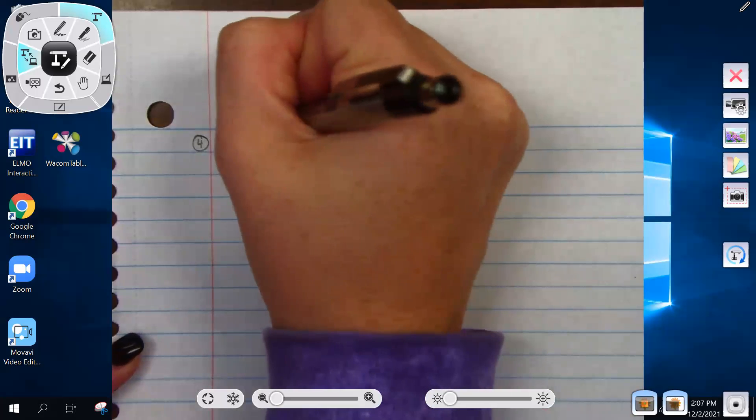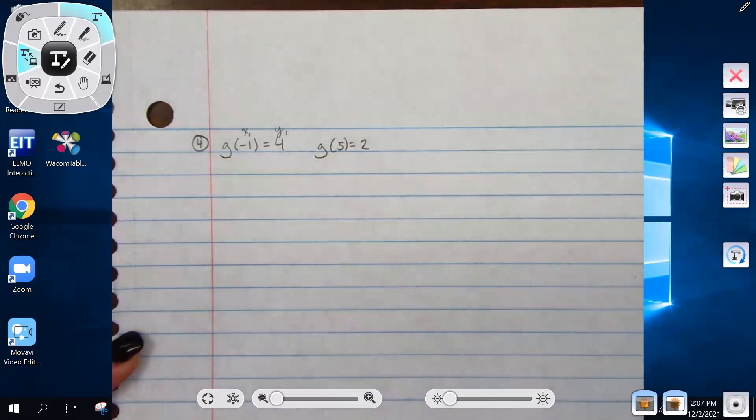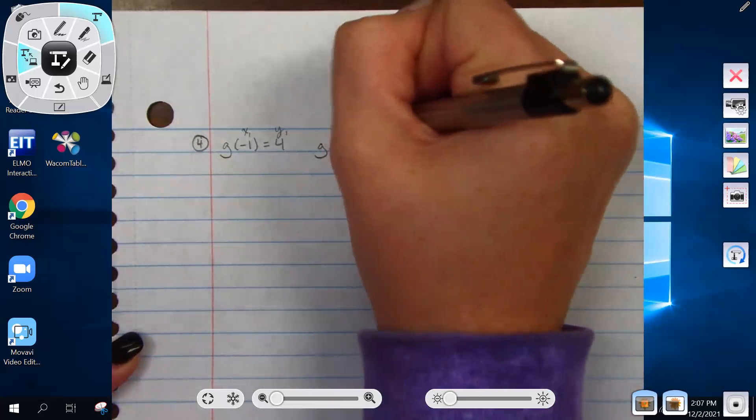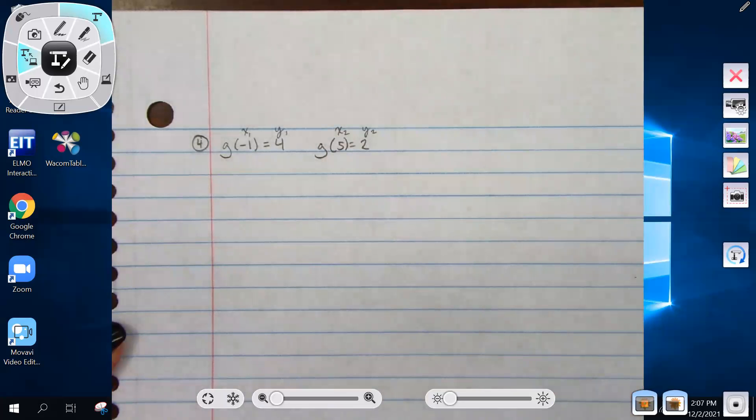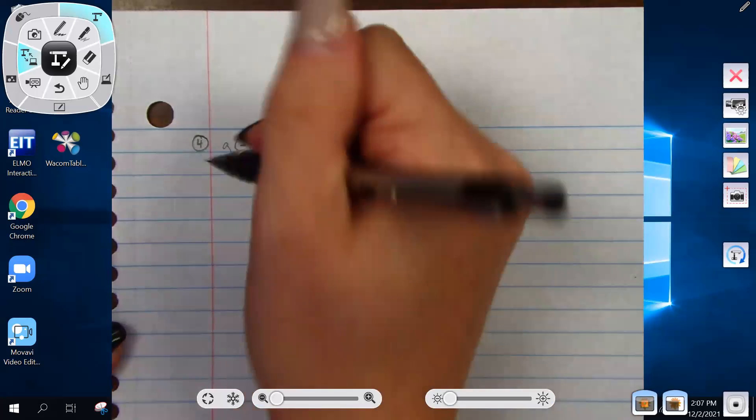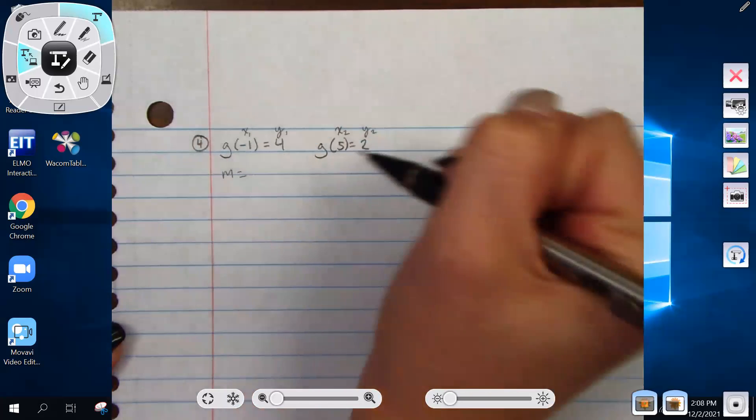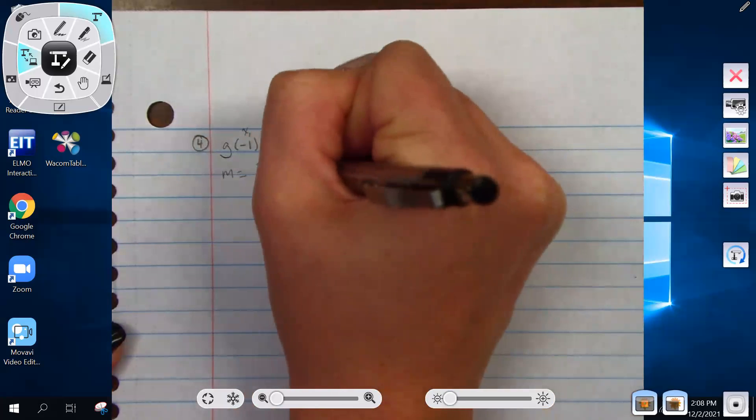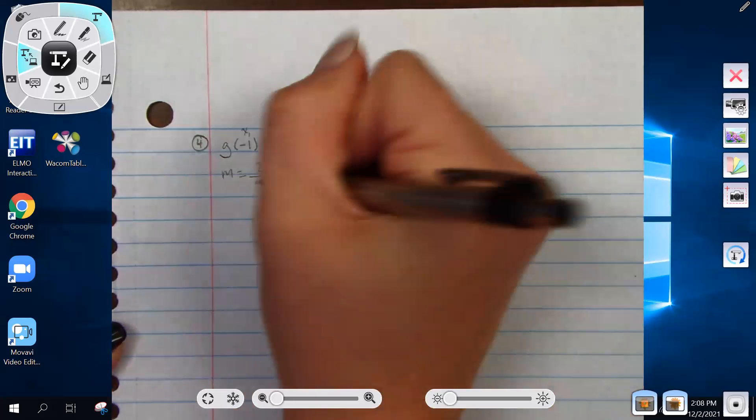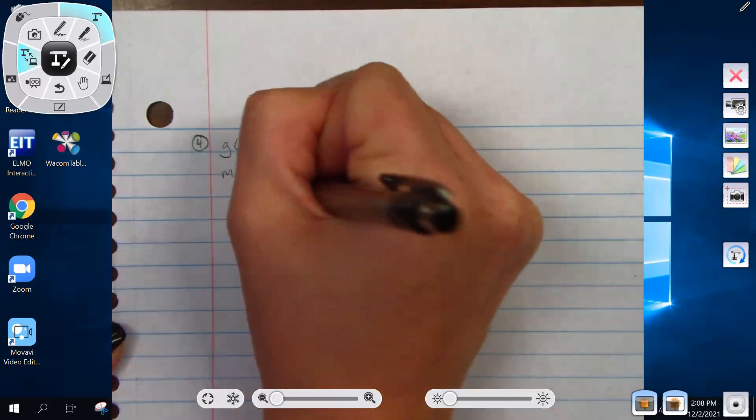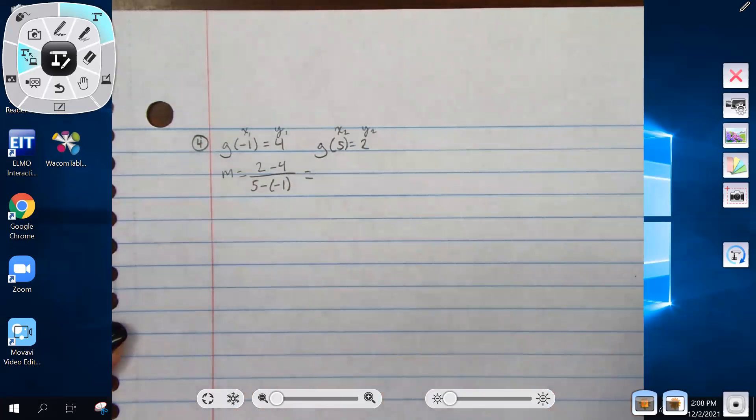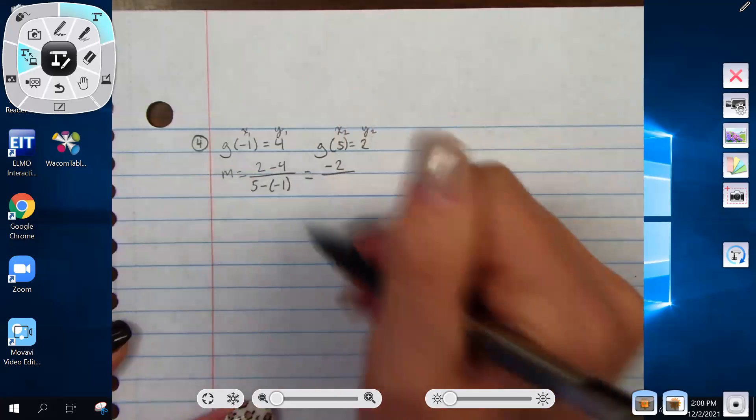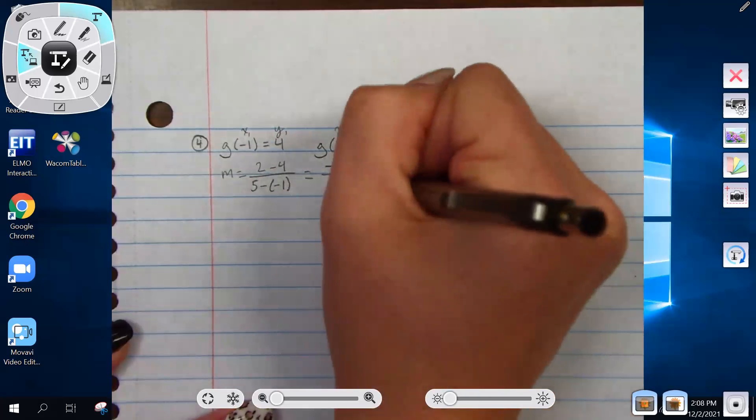This is our (x1, y1): negative one and four. Five and two is our (x2, y2). We need to find the slope between these two points. Slope is (y2 - y1)/(x2 - x1), so (2 - 4)/(5 - (-1)). Two minus four is negative two, five minus negative one is five plus one, which is six.